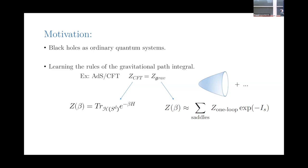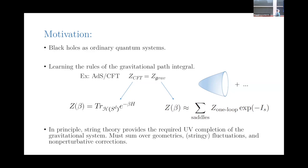We can try to approximate the gravitational path integral — the path integral over the fluctuating degrees of freedom of the bulk — by saddle point. So Z of beta will be approximated by some sum over saddles of e to the classical action weighted by one-loop corrections. We fix some boundary values for the metric and various background fields, and then consider various geometries that fill in the interior. It could be that there are other things contributing to the sum that don't have some interpretation in terms of smooth geometry — we might need to consider sums over many geometries, perturbative fluctuations, string corrections, and even non-perturbative corrections.